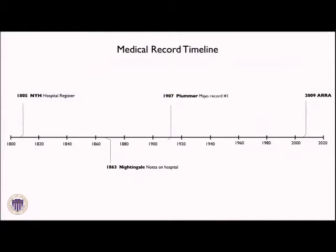I'd like to start with a brief review of how we got to the state where we are today. There is a timeline showing about 220 years of work on paper and electronic records. I began this timeline with the New York Hospital register in 1805, which many regard as a turning point in our use of records to record the practice of care. Florence Nightingale's paper is on this timeline as well. Henry Plummer was an influential endocrinologist and advocate of the paper record at the Mayo Clinic — that record was viewed as a starting point for a methodical collection of information, beginning in 1907.